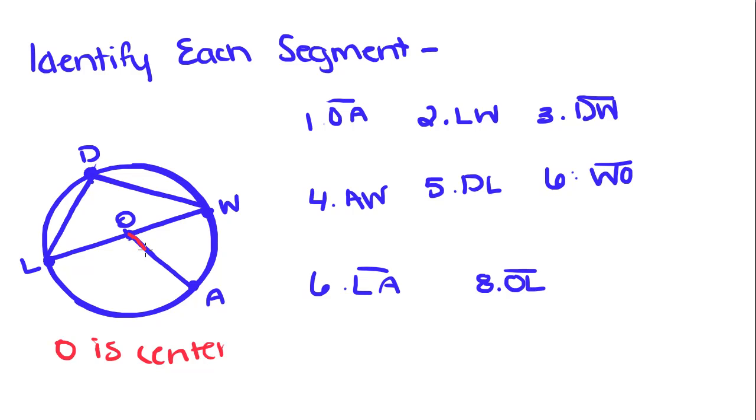This segment joins the center to a point on the circle, so OA is a radius.